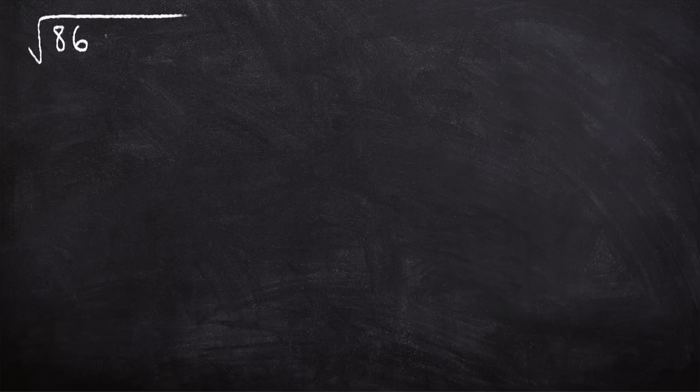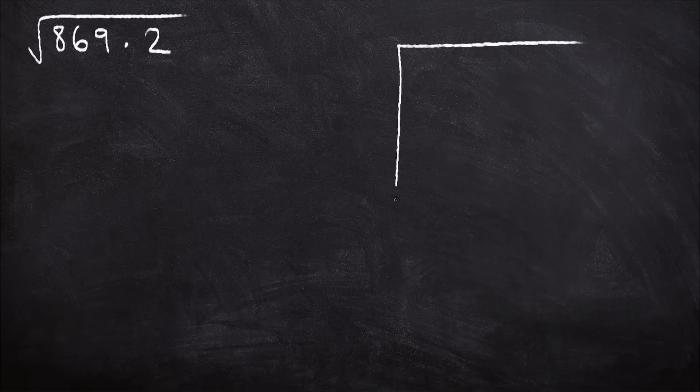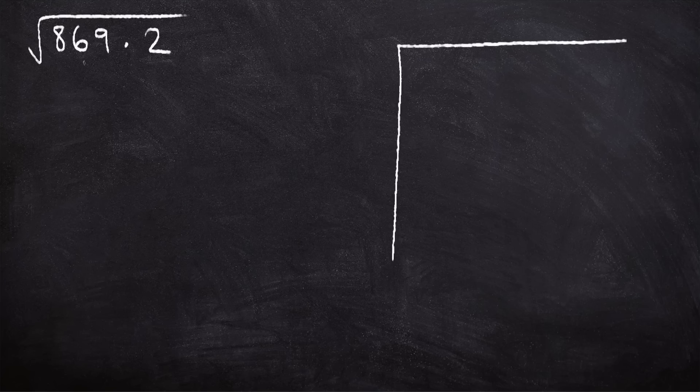There is actually a way to calculate square roots of numbers by hand. Let's say, for example, we want to calculate the square root of 869.2. So first of all, we're going to set up a large bus stop like this, and we're going to put in the number, but we're going to put it in pairs. So starting from the decimal point, we've got the first pair is 69.